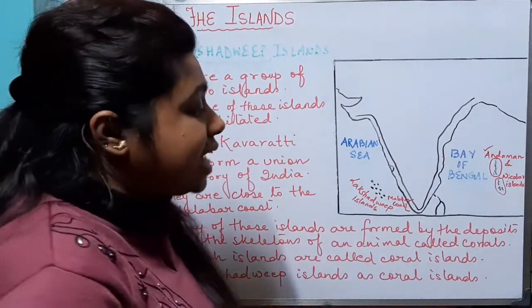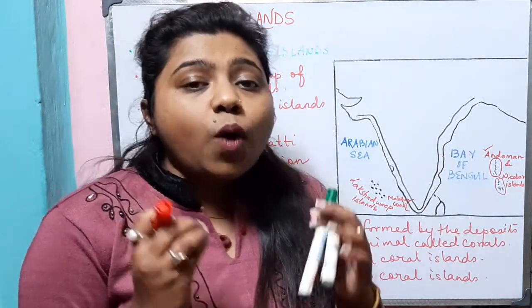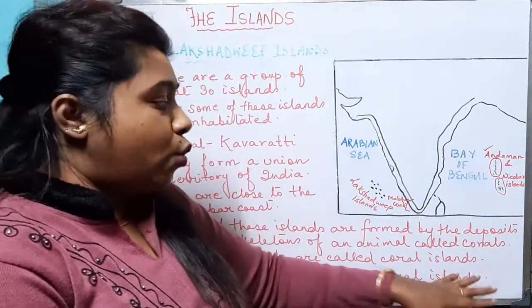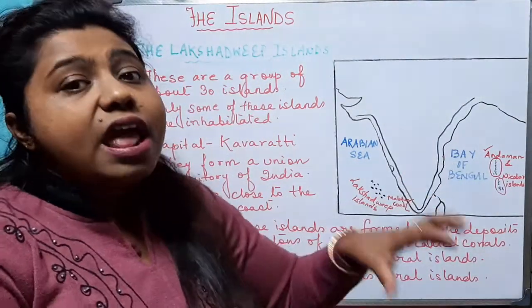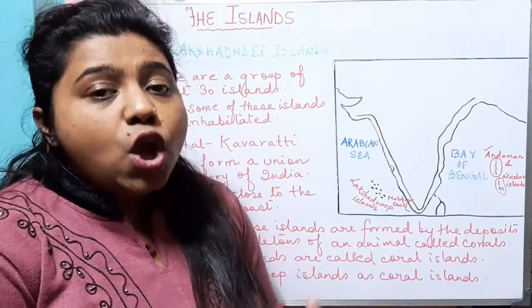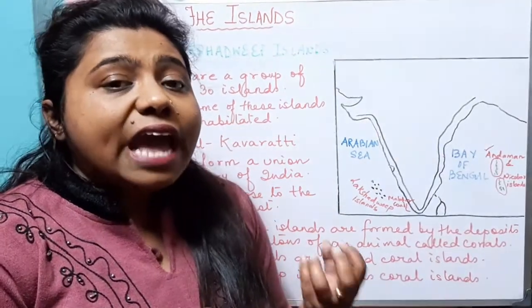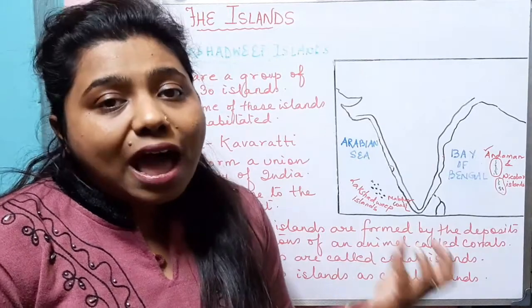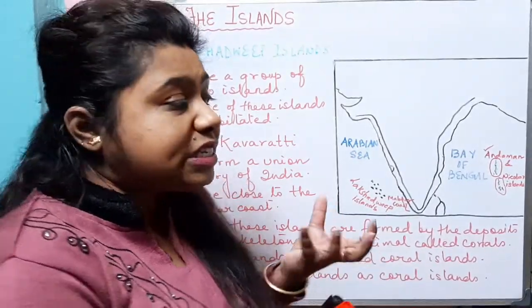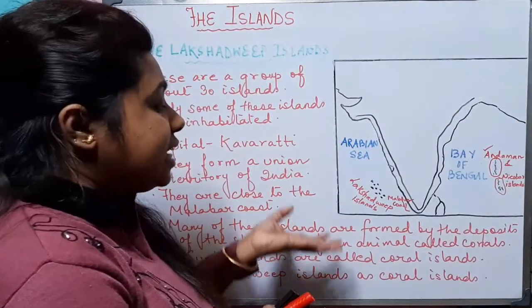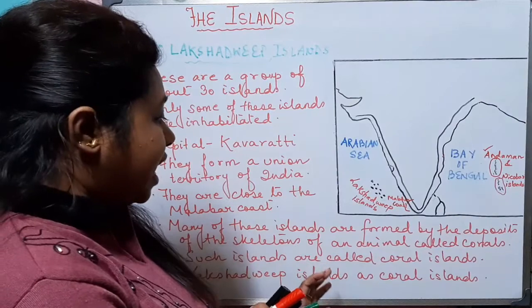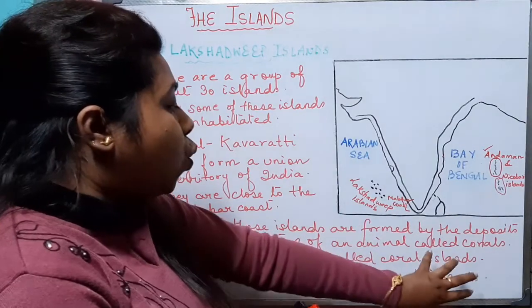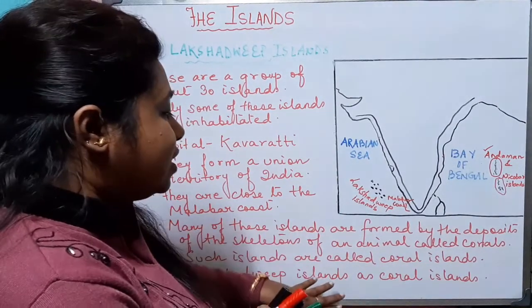In Lakshadweep, the climate and the seawater required for the growth of corals are available. That is why we call Lakshadweep the coral islands — as these animals die, their skeletons get deposited and form the coral islands. So Lakshadweep is known as the coral islands.